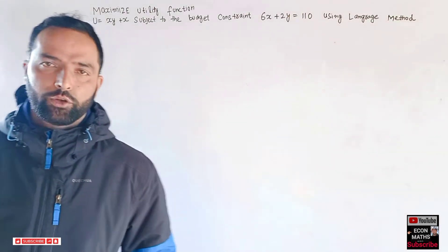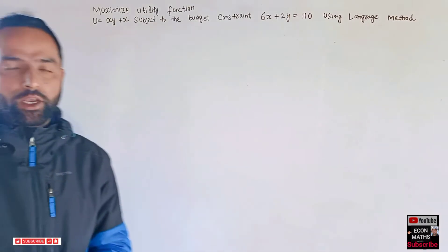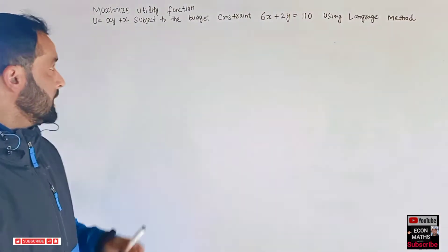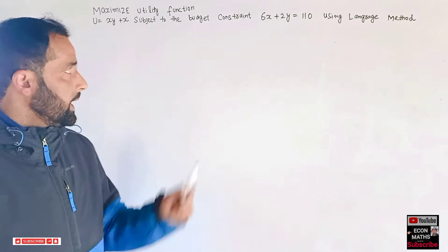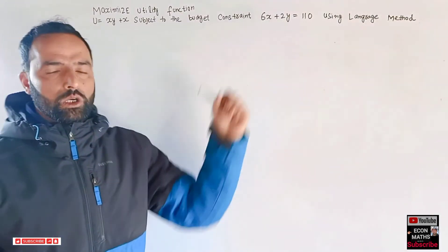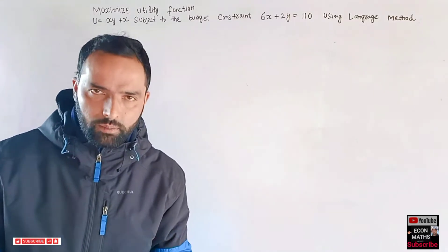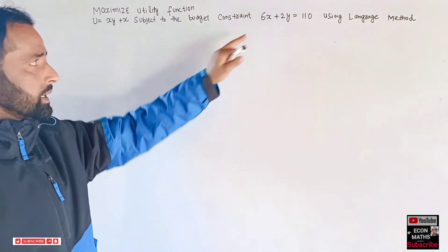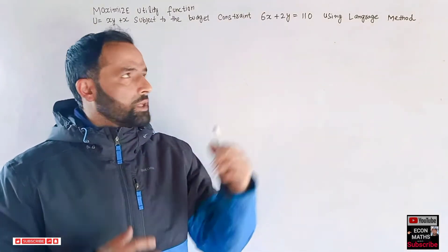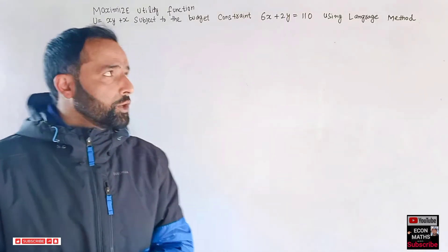The question is: we have to maximize a utility function u = xy + x, where u is the utility and x and y are the two goods the consumer is consuming. The constraint is 6x + 2y = 110, where 110 denotes the total income of the consumer, 6 denotes the price of good x, and 2 denotes the price of good y.